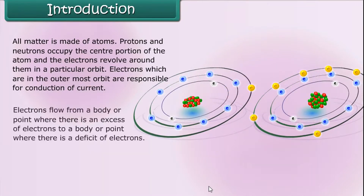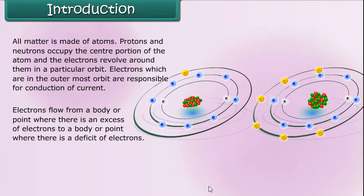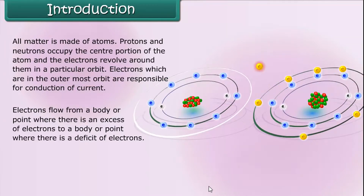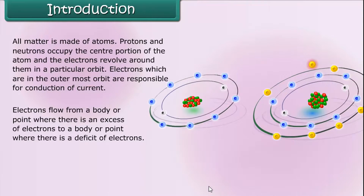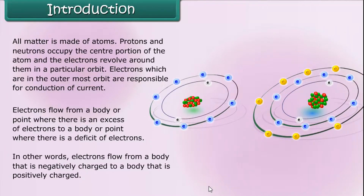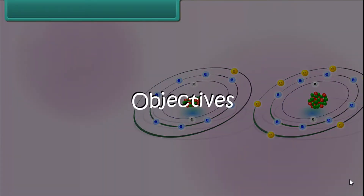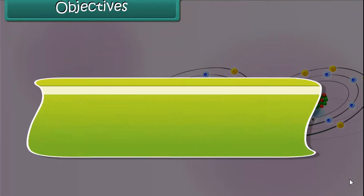Electrons flow from a body or point where there is an excess of electrons to a body or point where there is a deficit of electrons. In other words, electrons flow from a body that is negatively charged to a body that is positively charged.